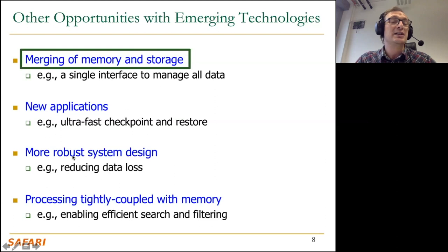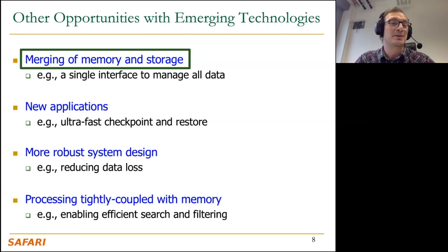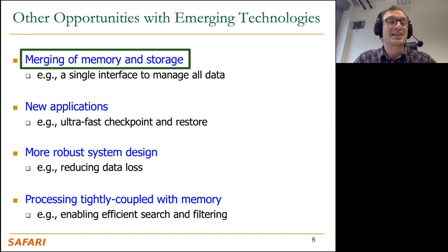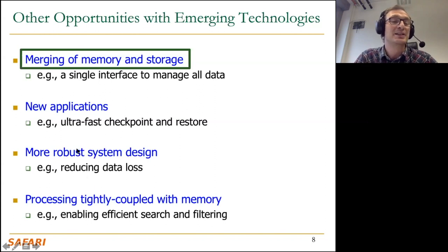On a power loss, whatever data you may have written to persistent memory may not be in a consistent state. If you don't modify your applications, you may run into this consistency problem — it's called the crash consistency problem. You may have updated part of your data structure but not some other part. If you trust that your memory is persistent and it will come up with all the data updates after the power loss is handled, it will come up, but you may start in a state that's not good for your workload.